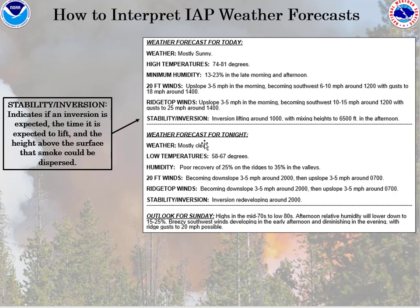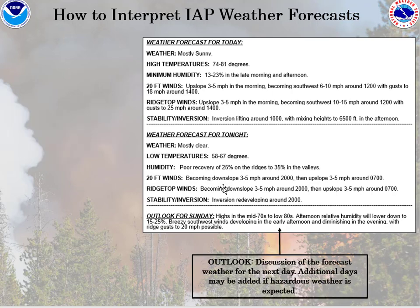For the tonight period, we have basically the same elements — weather, temperature, humidity, winds, and inversion — but it covers the low temperatures, the highest relative humidity that's expected, and whether an inversion is expected to form over the nighttime period.